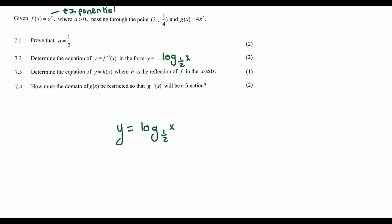7.3. Determine the equation of y, which is equal to h, where h is the reflection of f in the x-axis. Okay. So let's give that some careful thought. I'm going to place a random point over here, where its coordinates would be minus 2 and 3. That's just a random point that I'm choosing.